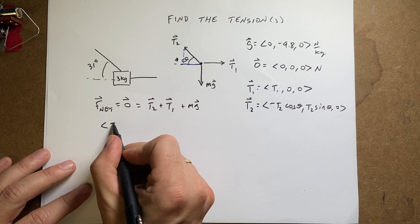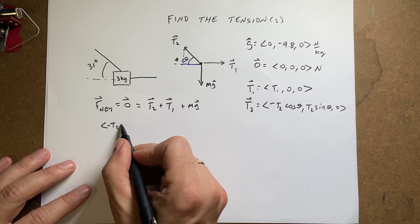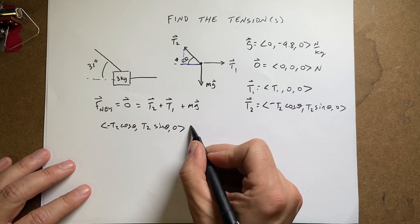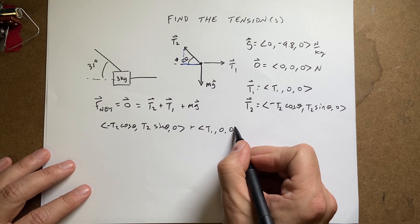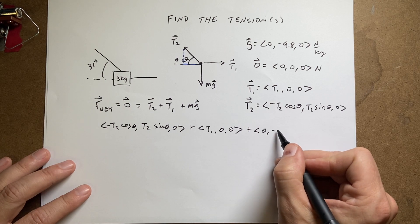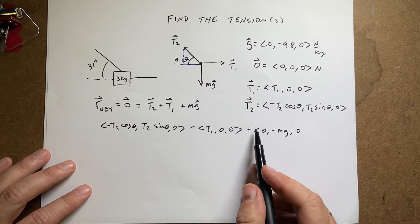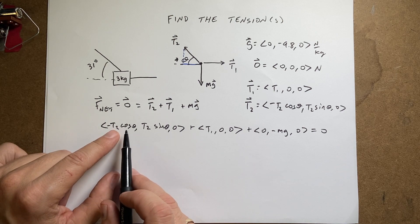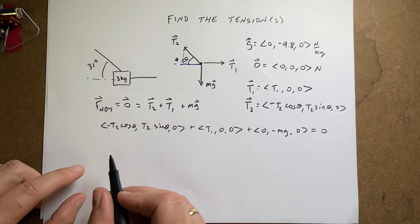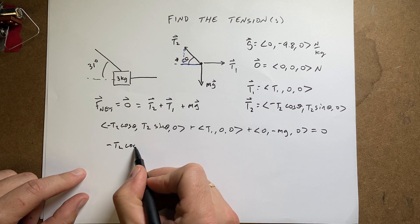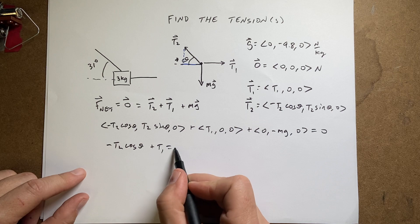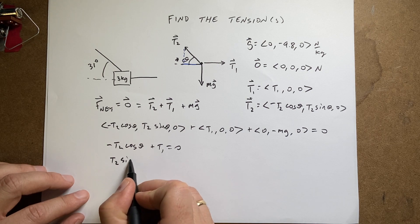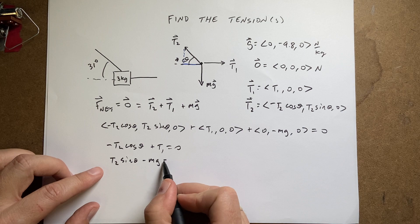Now let's add up all these vectors. I have (−T2 cosine theta, T2 sine theta, 0) plus (T1, 0, 0) plus m times (0, −9.8, 0) equals (0, 0, 0). From that, the x components have to add up: negative T2 cosine theta plus T1 equals zero. And the y components have to add up: T2 sine theta minus mg equals zero.